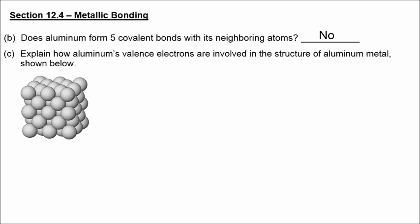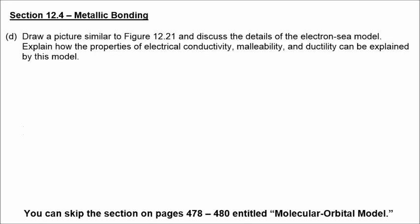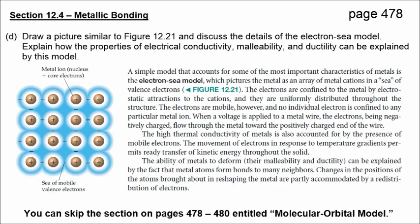Now you might wonder, for aluminum, that would be 8 minus 3. Does aluminum actually form five bonds with its neighbors? And the answer is no. Explain how aluminum's valence electrons are involved in the structure of aluminum metal. Remember, we talked about metallic bonding earlier, and we said that metals have these loosely held, delocalized valence electrons. Metals don't have enough valence electrons to satisfy their bonding requirements by forming localized electron pair bonds. Instead, the valence electrons are collectively shared between several adjacent atoms packed closely together in a crystal lattice.